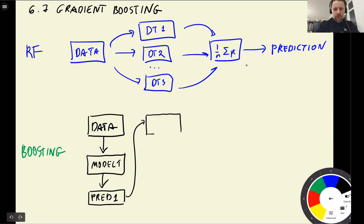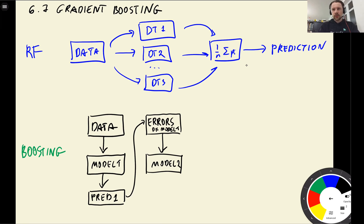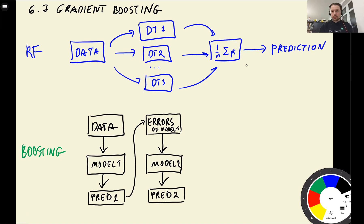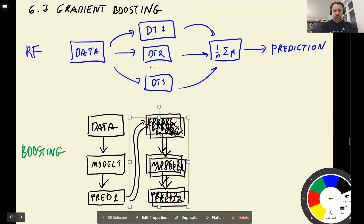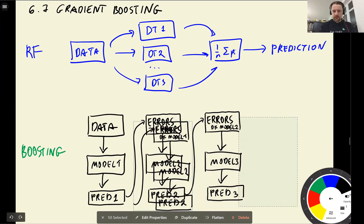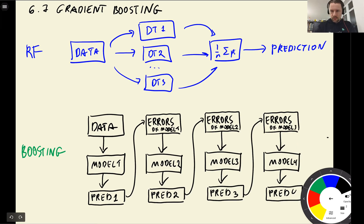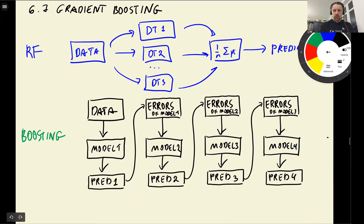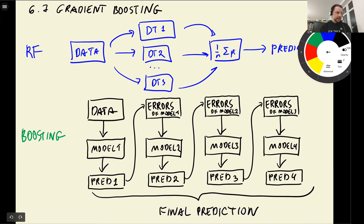We get the errors of model one, and based on these errors we train another model. That second model makes predictions again, also makes some errors, and we train a third model that corrects the predictions of the second model. We can keep repeating this for many iterations, and at the end we combine multiple predictions into the final prediction. This is the idea behind boosting.